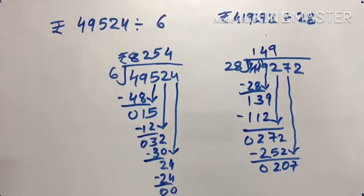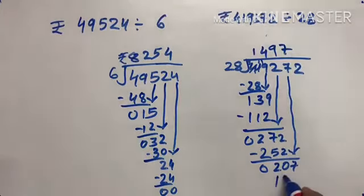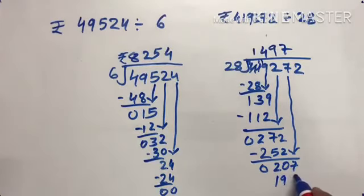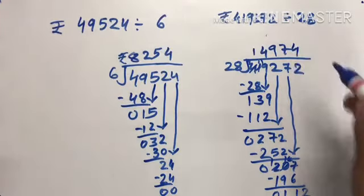207 divided by 28. 28 times 7 is 196. 207 minus 196 is 11.